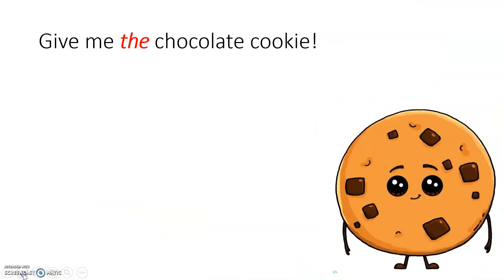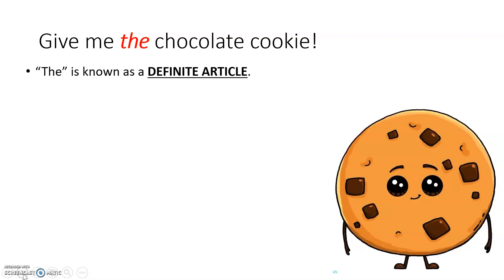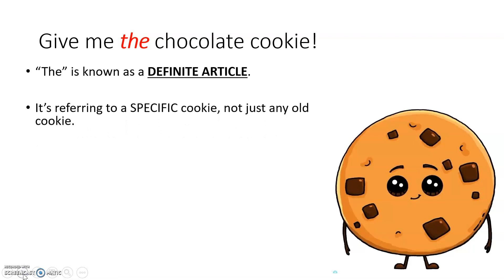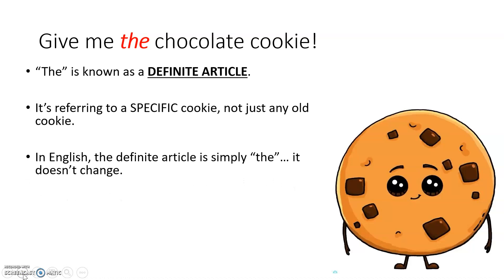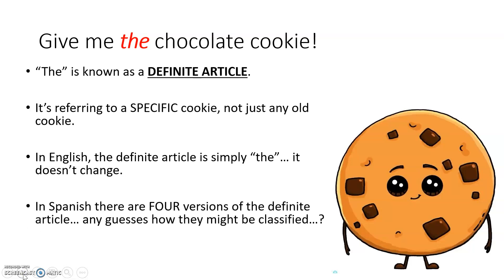Let's take a closer look. We're going to start with our lady on the right hand side who had her eye on that chocolate one and said 'give me the chocolate cookie.' 'The' is known as a definite article. It's referring to that specific cookie — not just any old one on the plate, that chocolate chip one. In English the definite article is simply the word 'the' and it doesn't change. However in Spanish there are four versions of the definite article — four words for the word 'the.' Any guesses how they might be classified?